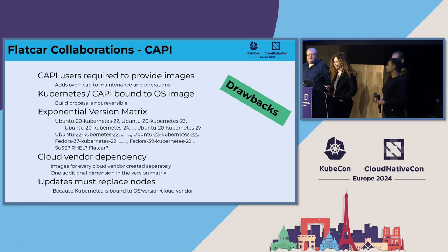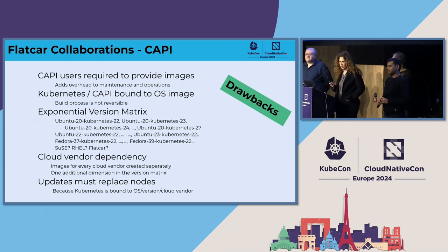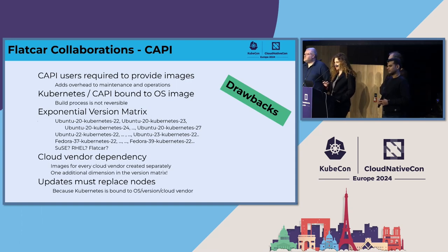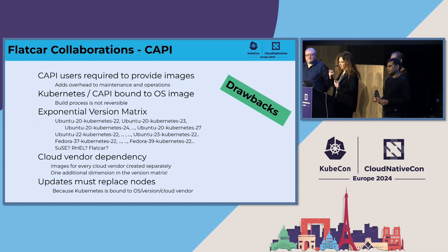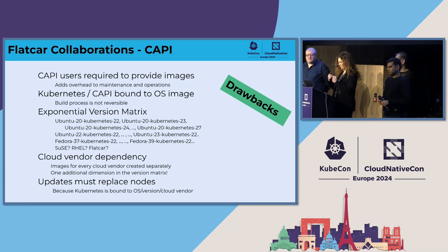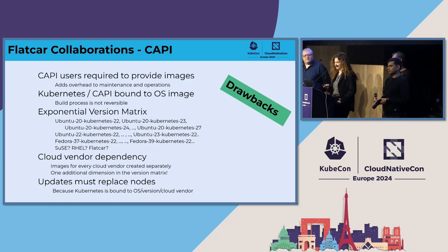What I want to show is not just a focus on Flatcar, but how it fits into the bigger picture with other CNCF projects and working groups. Flatcar contributed to CAPI. Currently, how you create an image in CAPI, you have a matrix of complexity with three dimensions: the Kubernetes version, the cloud provider, and the OS image. All three parameters create a specific image that you need to maintain, and when you update, you must replace the node itself — it's kind of painful.